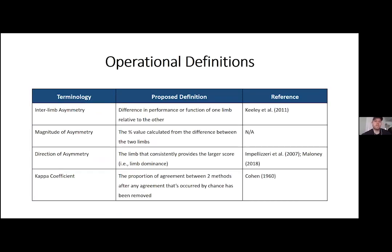Part one is our operational definitions slide. Interlimb asymmetry is defined as the difference in performance or function of one limb relative to the other — 'performance' used in athletic studies, 'function' used in injury-based studies. 'Interlimb' describes comparing left to right, dominant to non-dominant, or injured to healthy limb — not to be confused with intra-limb asymmetry, which focuses on an imbalance within the same limb, such as quadricep-to-hamstring ratios within the same leg.